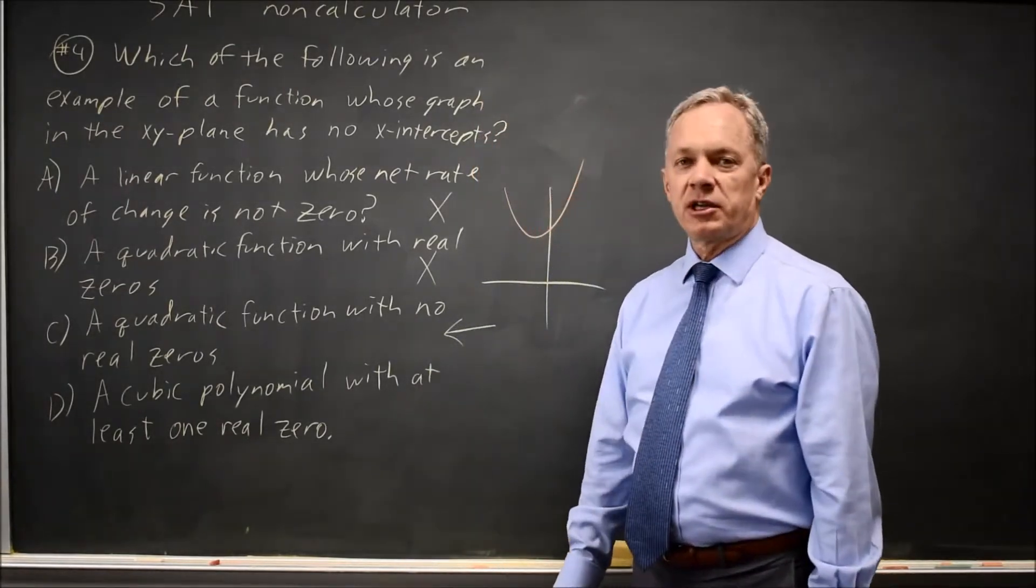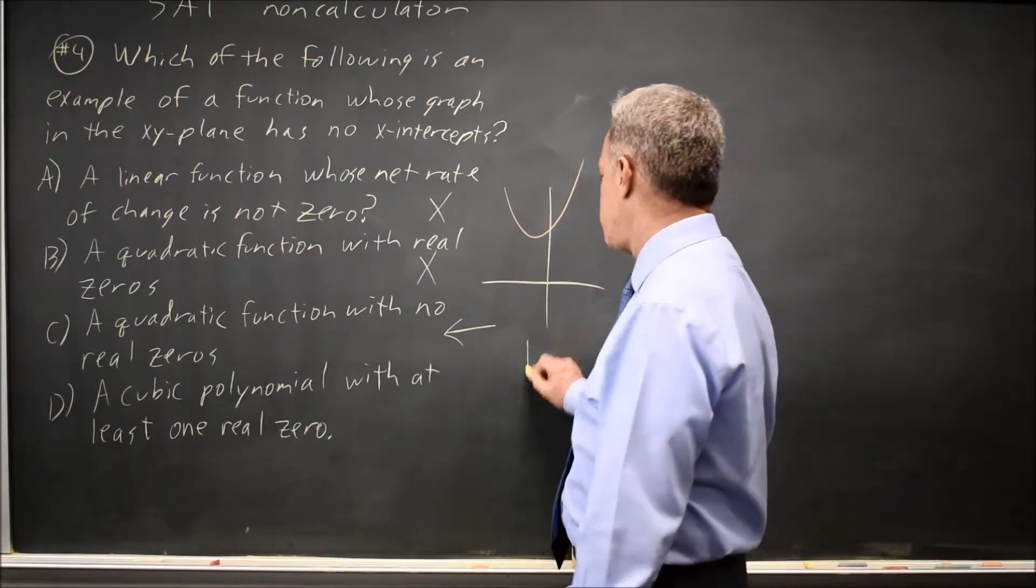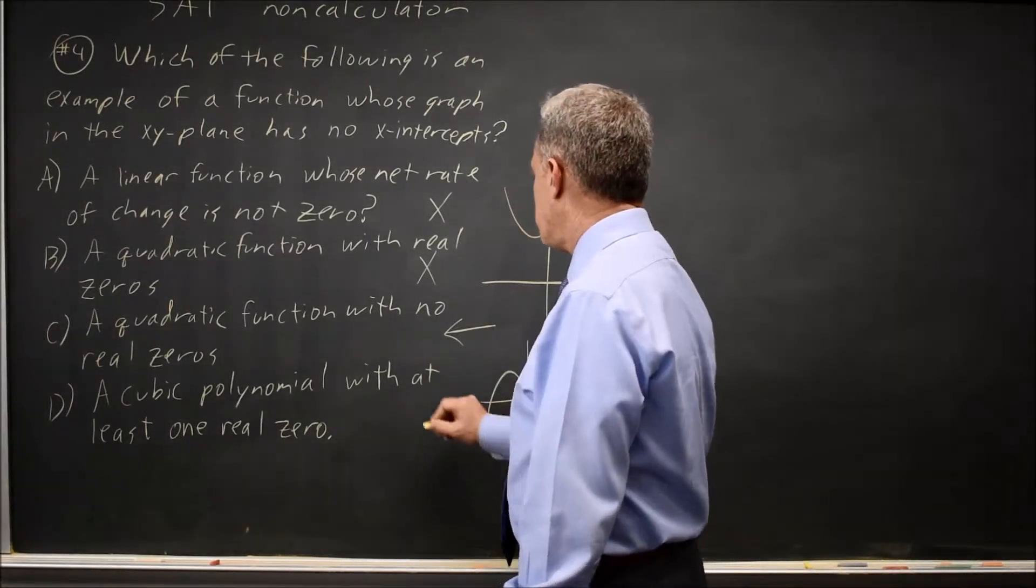And choice D is a cubic, and all cubics have real zeros. All cubics have at least one x-intercept, so choice D would be wrong.